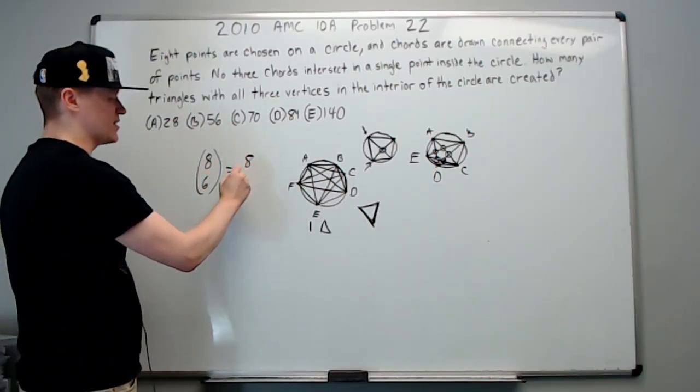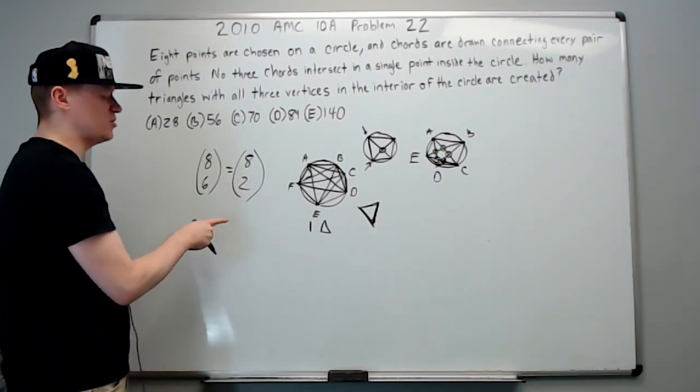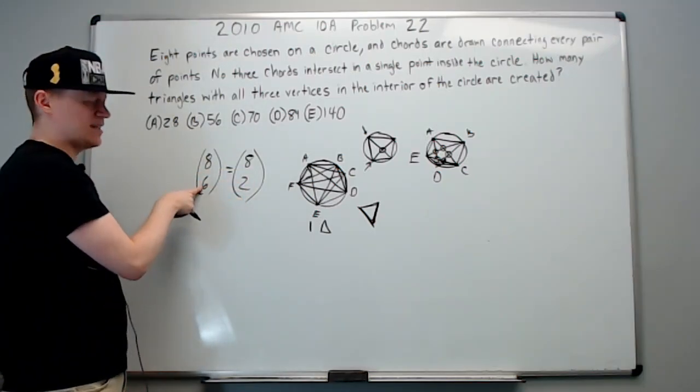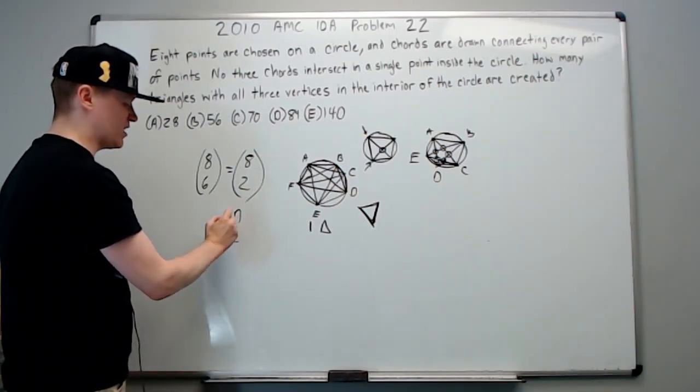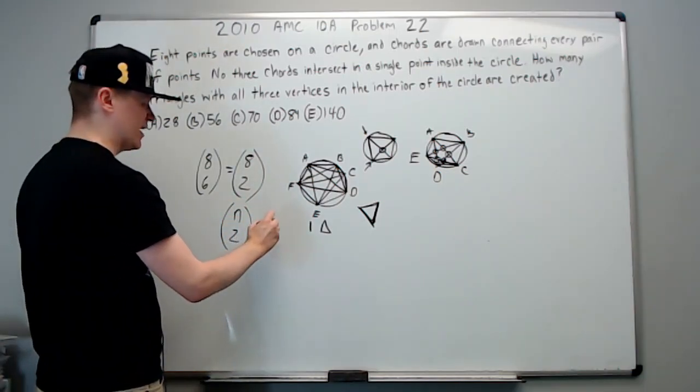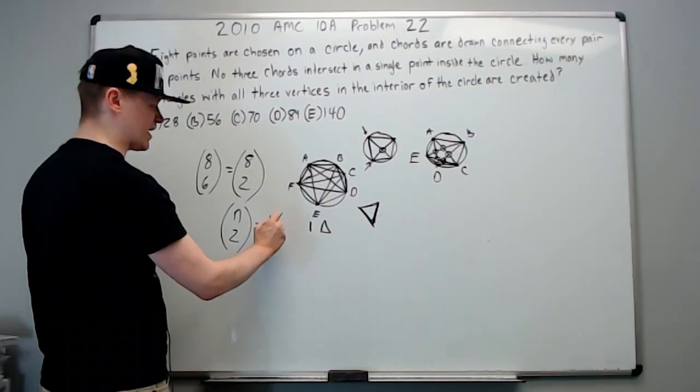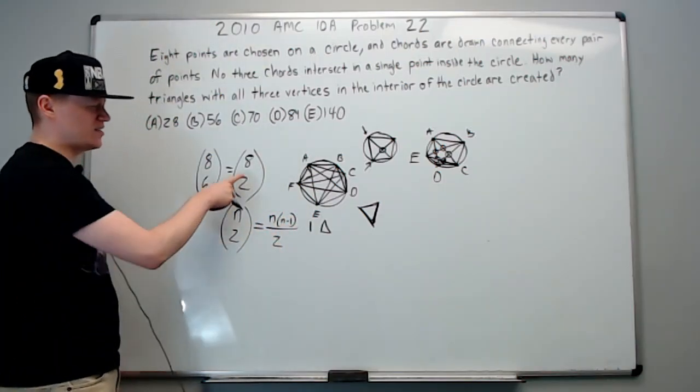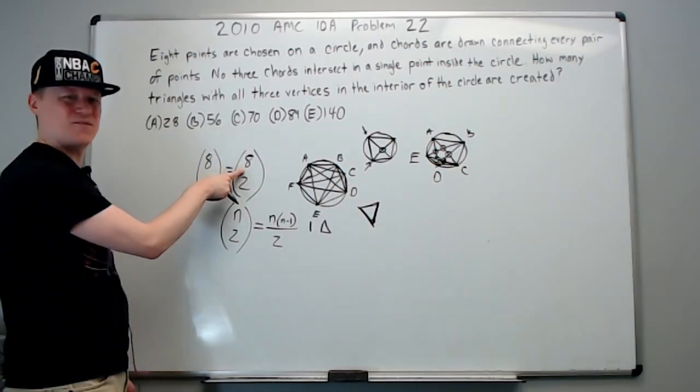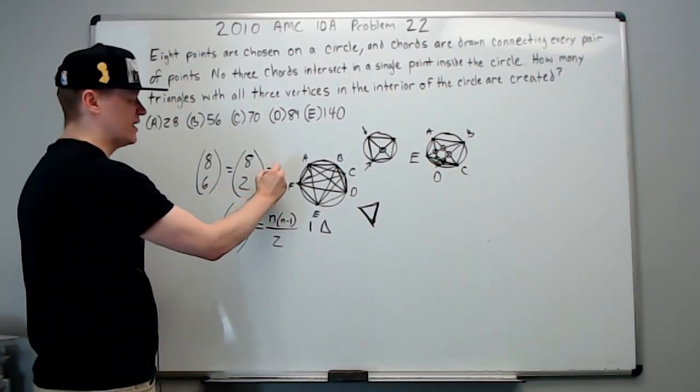You should already know this is equal to eight choose two. Why do I convert it? You could easily do the calculation with this, but this has a shortcut. Again, you might have seen me talk about it in other videos. N choose two is N times N minus one over two. And so we can do it a little faster. It's eight times seven, 56 over two is 28. And that's the answer.